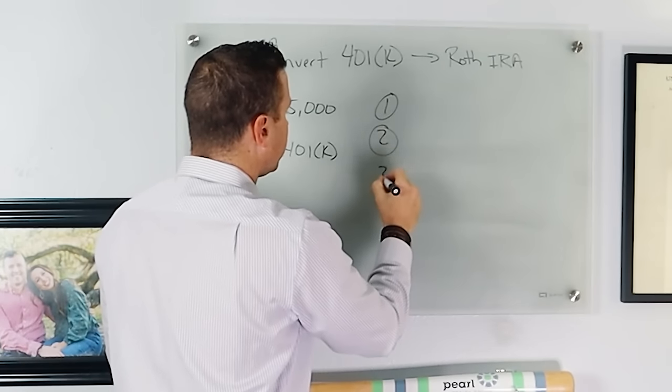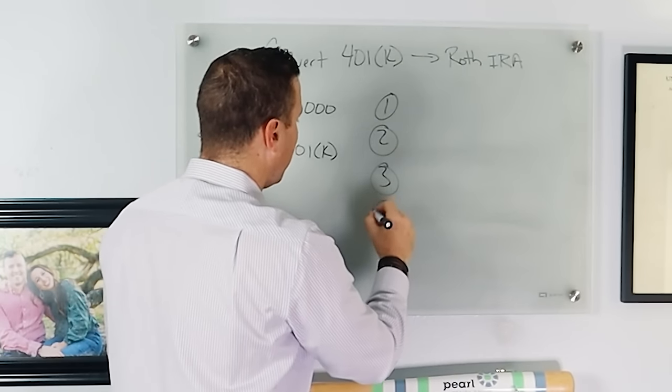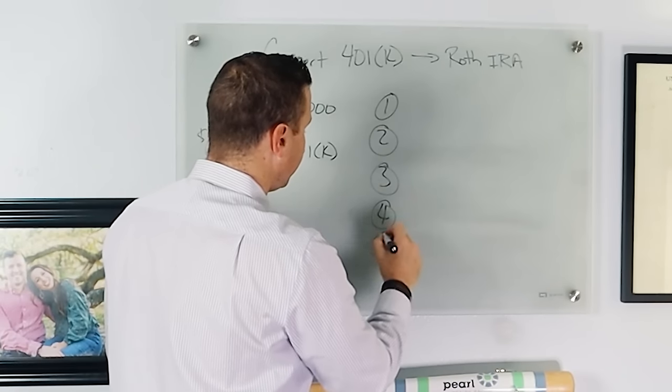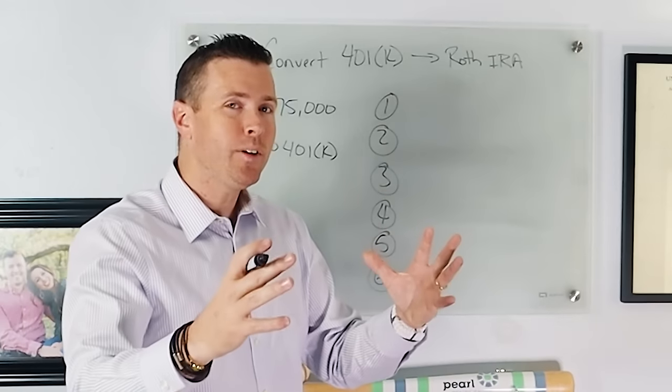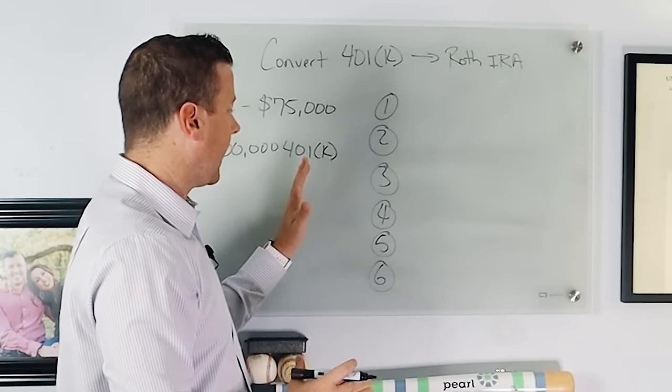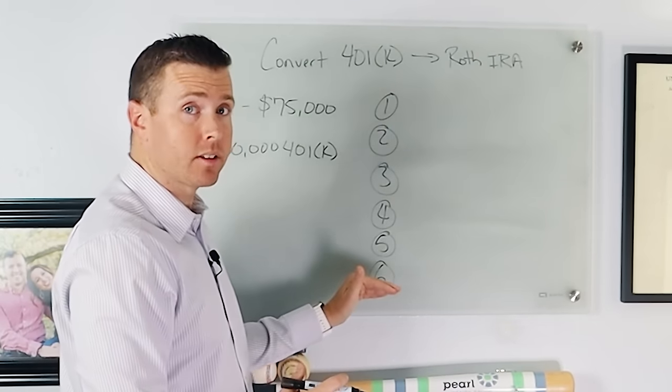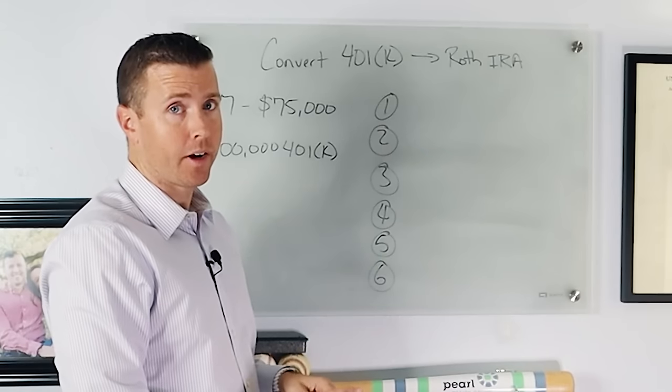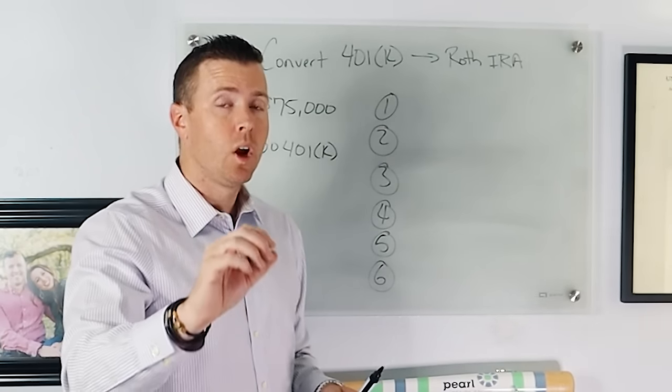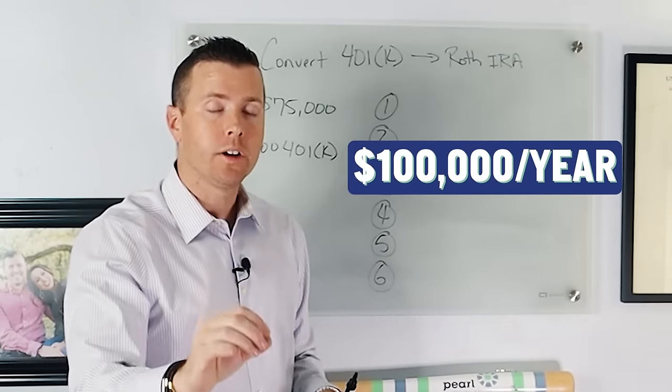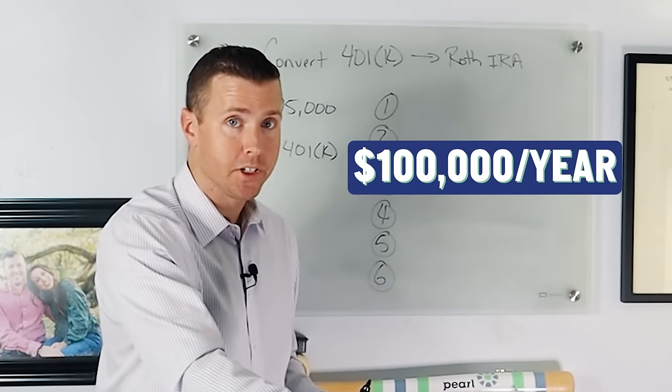So we'll have one bucket, two, three, four, five, and six. And what we're going to do is equally separate our old 401k into six different Roth IRAs. But we're not going to do it all at once.